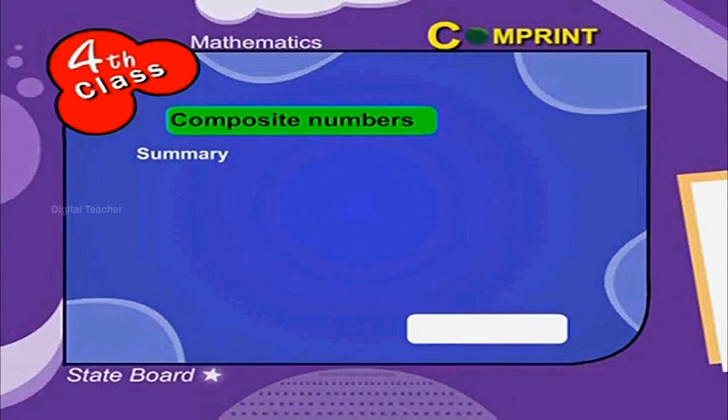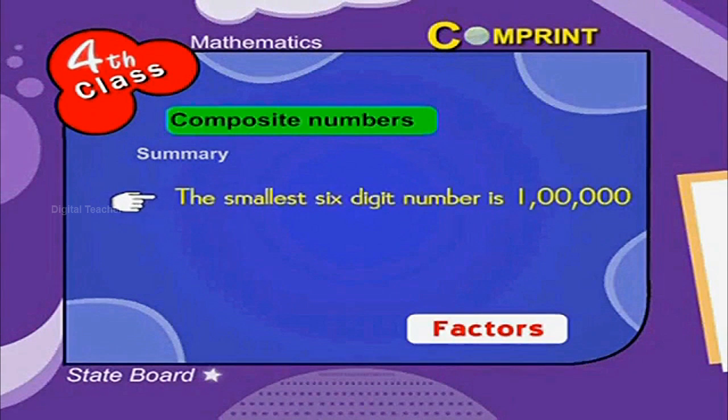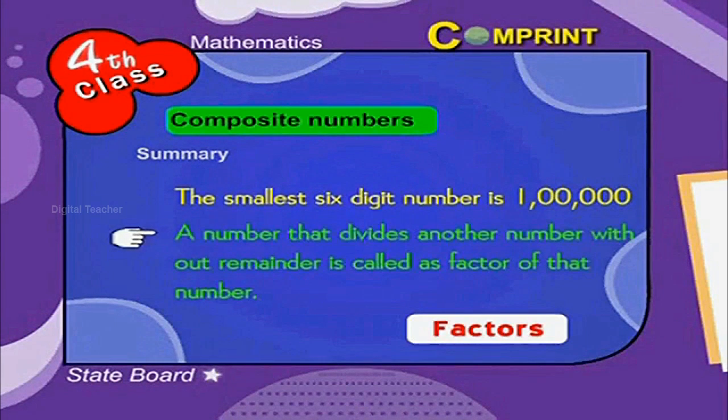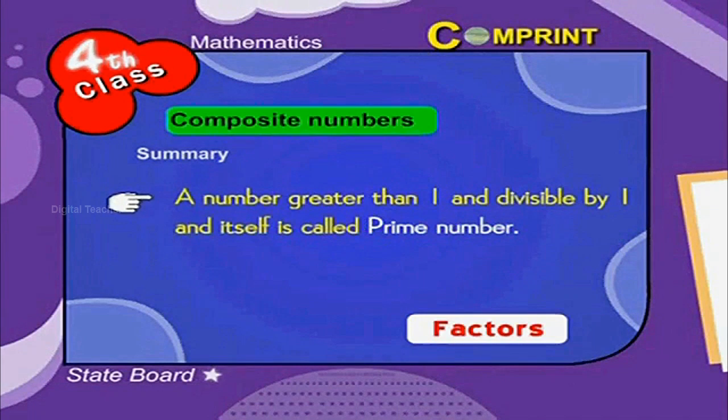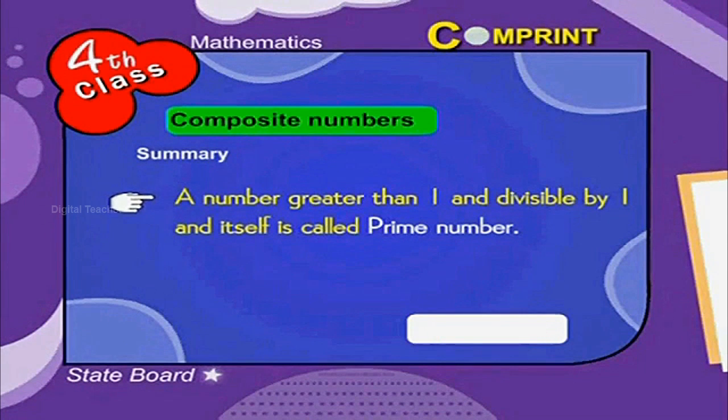Points to remember: The smallest 6 digit number is 1,00,000. A number that divides another number without remainder is called as factor of that number. A number greater than 1 and divisible by 1 and itself is called prime number.